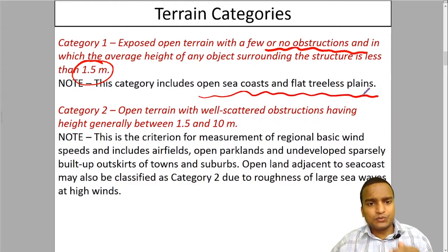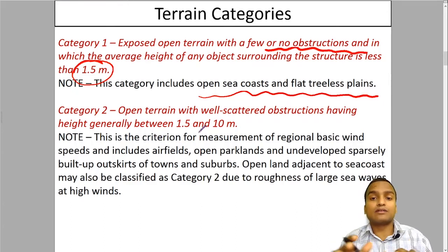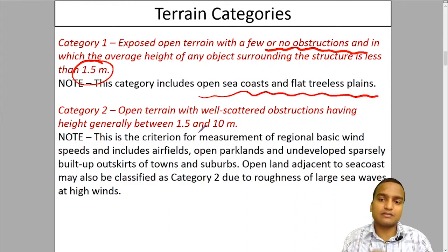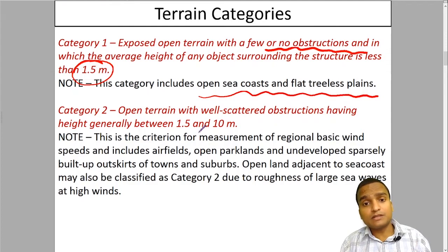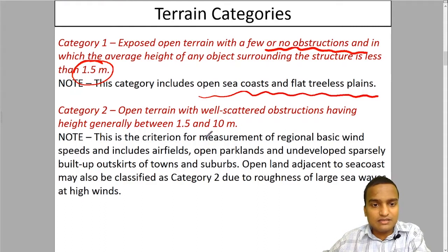Category 2 is the open terrain with well-scattered obstructions. There are obstructions but they are scattered, having height generally between 1.5 meter and 10 meter. These are generally in the villages. Such terrains are in the airfields, open parklands, undeveloped, sparsely built up outskirts, villages, suburbans.